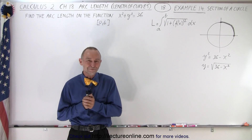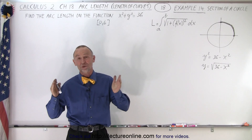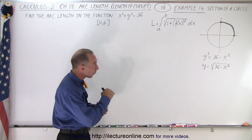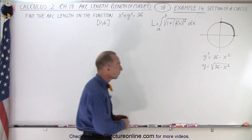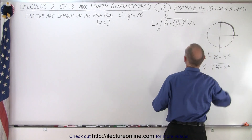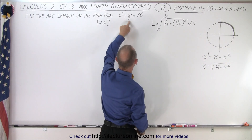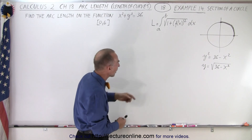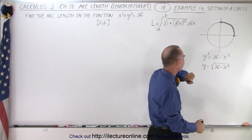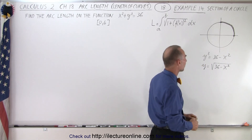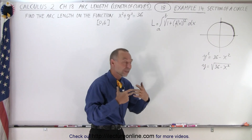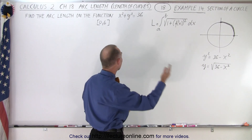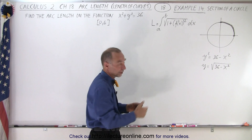Welcome to ElectronLine. Here we're going to find the length, or at least the partial length, of an arc of a circle. We're going to take one quarter of the circle going from this point to this point. The circle is defined by the equation x squared plus y squared equals 36. Solving for y, we get y equals the square root of 36 minus x squared, and we'll use that equation to find the arc length from x equals 0 to x equals 6.